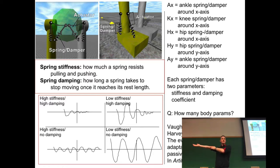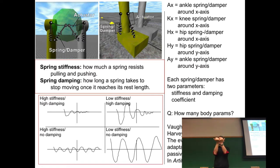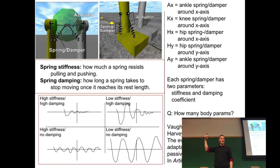We've now seen position control (setting the desired angle of a joint), velocity control (outputting a desired velocity for a wheel), and now spring control, where the motor controls a spring near a passive joint. The piston can extend or compress the spring.